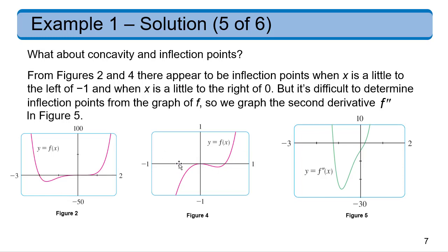there appear to be inflection points when x is a little to the left of negative 1 and when x is a little to the right of 0. But it's hard to figure out exactly where those things occur, so we go to the second derivative.